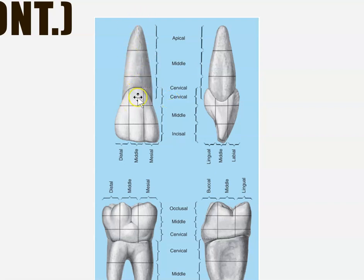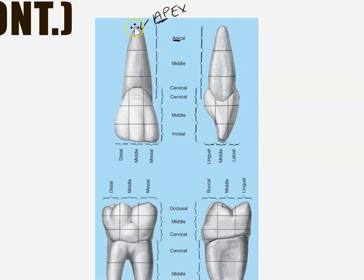Even if you look at the root, you can divide it into three sections as well. Cervical is the one closest to where the enamel and root meet. Then we have the middle third, and then we have the apical. The end of the root is called an apex — so apical and apex both start with 'ap,' which is how I remember it. The apical third is at the very end of the root.